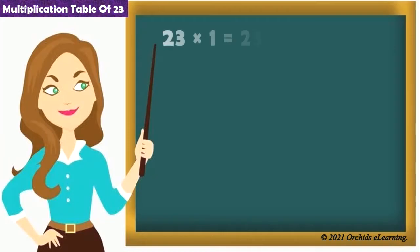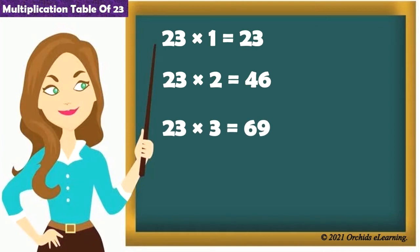23 1s are 23. 23 2s are 46. 23 3s are 69. 23 4s are 92. 23 5s are 115.